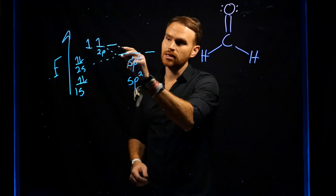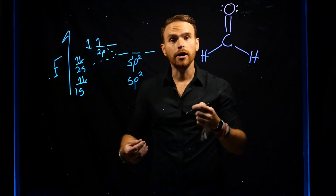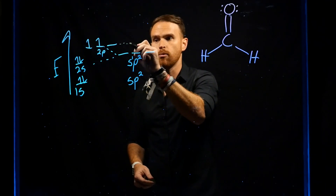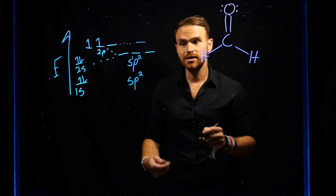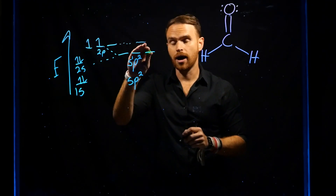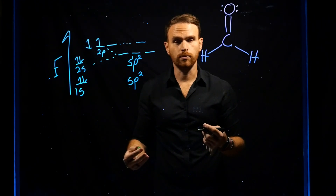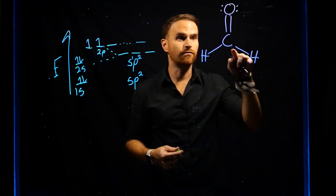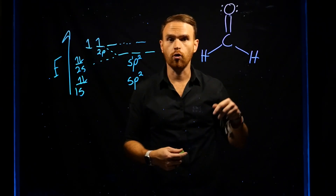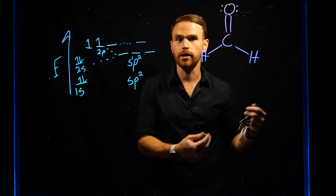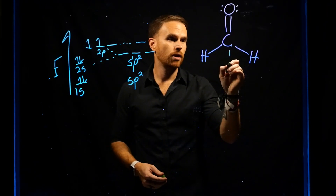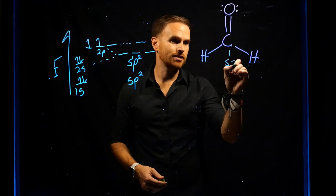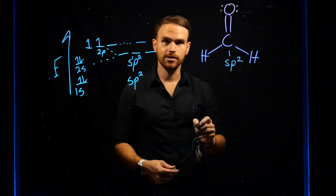Notice that this leaves one unhybridized p orbital. That's actually the orbital involved in the pi bond that's formed between carbon and oxygen. So carbon is sp2 hybridized.